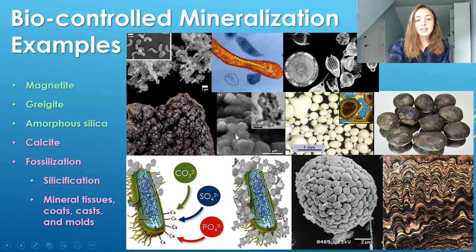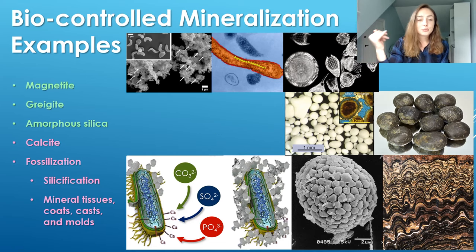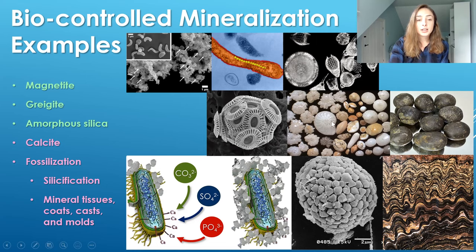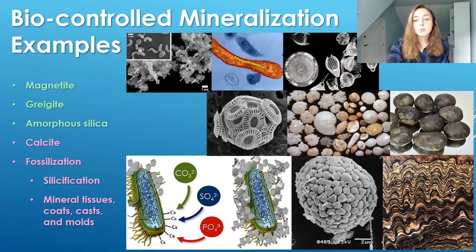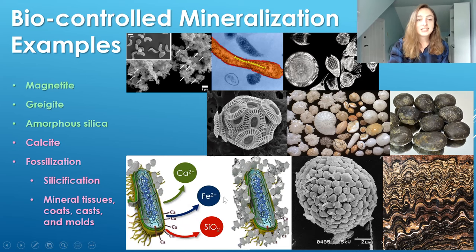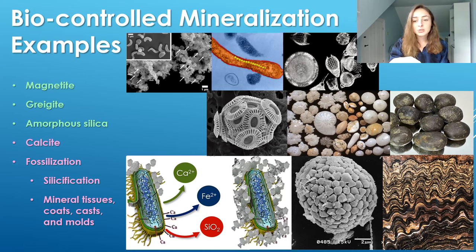We had manganese oxides and clays — we will not be talking about those in the biologically controlled section of these videos because they are only formed by biologically induced processes rather than controlled processes, at least to our current knowledge. And then we will talk about calcite again in the case of biologically controlled mineralization — but instead of things like ooids, we'll talk more about coccolithophores and forams and other organisms that control their calcite precipitation rather than just making calcite as a byproduct of their metabolic waste or their reactive surfaces. In the case of biologically controlled mineralization, the ions are actually being sought out and captured and taken up into the cell by active enzymatic processes employed by the microbe — a very different and more controlled process than the induced mineralization we talked about earlier.